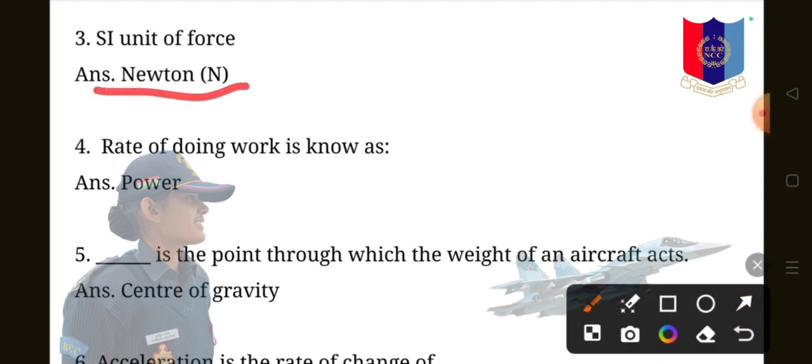Question 4: rate of doing work is known as power. Question 5: dash is the point through which the weight of an aircraft acts. Answer is center of gravity.